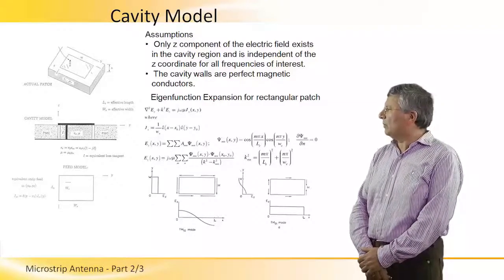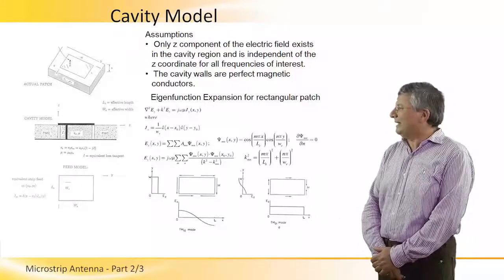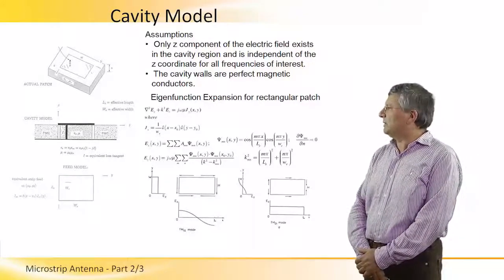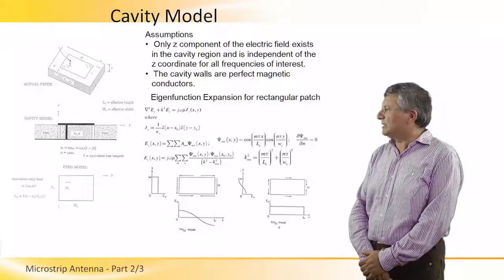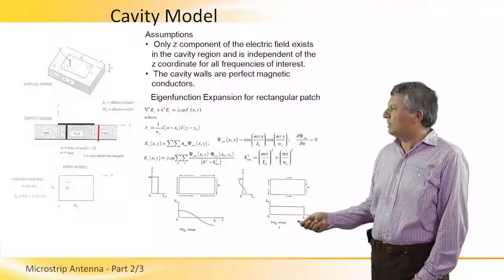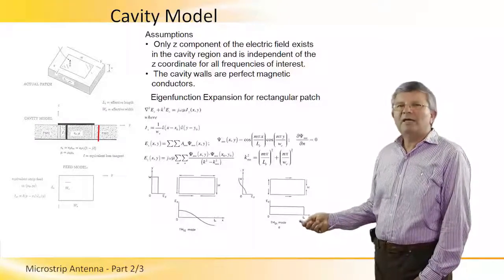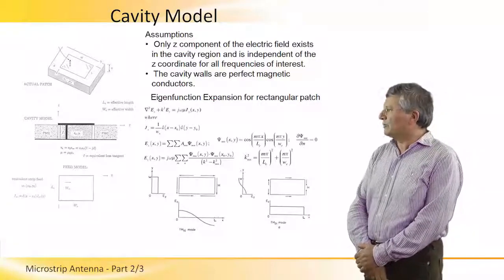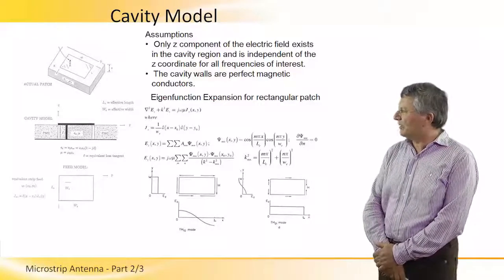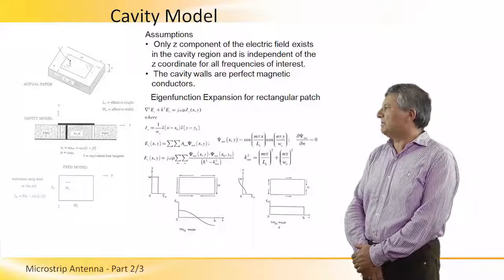that only the z component of the electric field exists in the cavity region and is independent of the z coordinate for all frequencies of interest. This assumption is actually based on the fact that H is much, much less, is very small relative to the wavelength. The second assumption is that the cavity walls are perfect magnetic conductors, as I mentioned before.